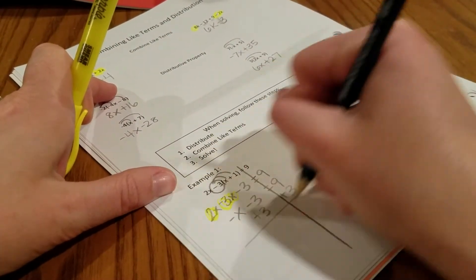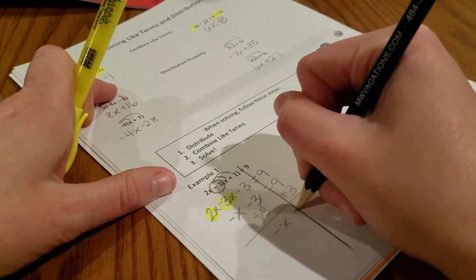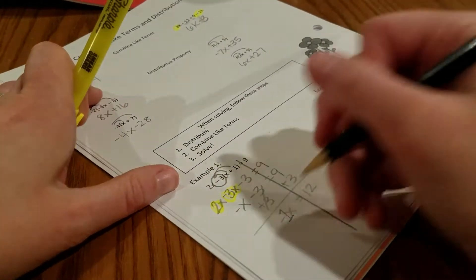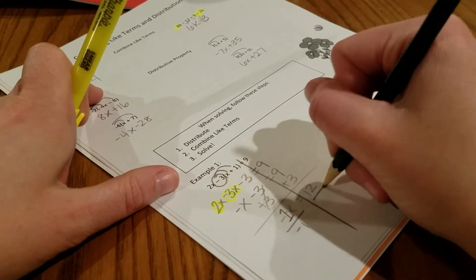Add the 3. This is just a basic one now. Negative x equals 12. Remember it's negative 1x. So to get x, we have to divide by negative 1. We get x equals negative 12.